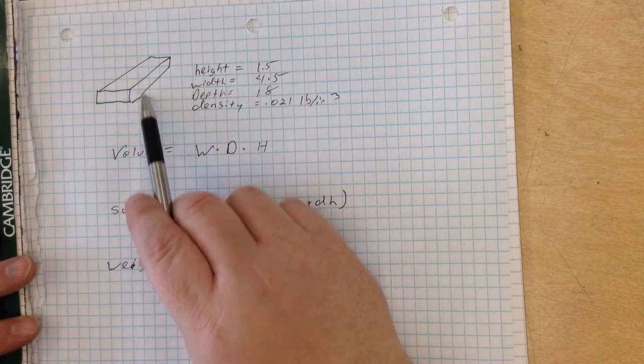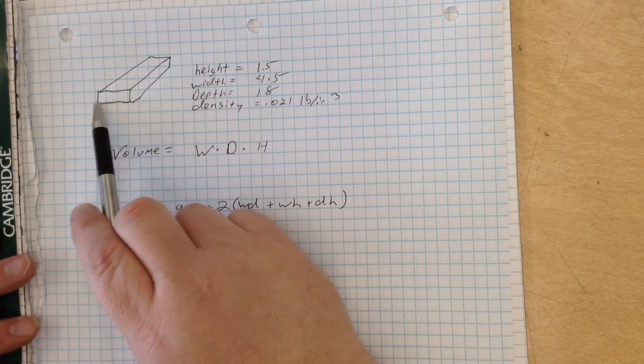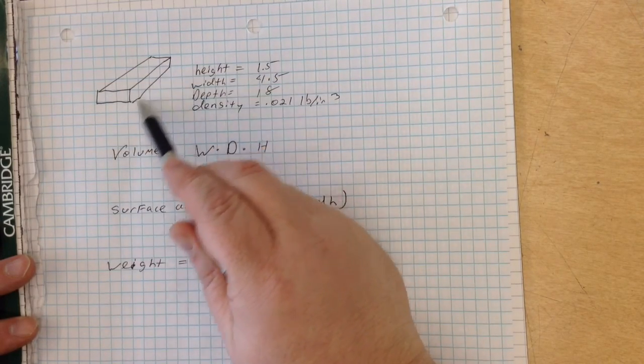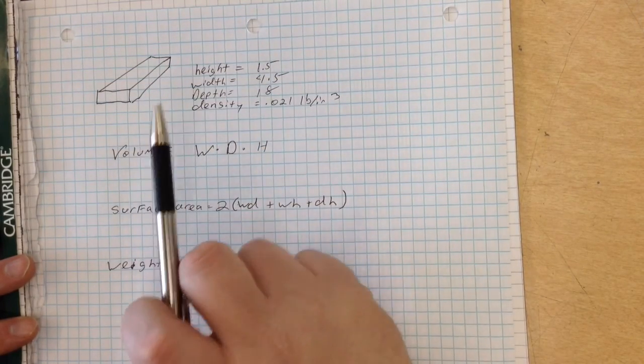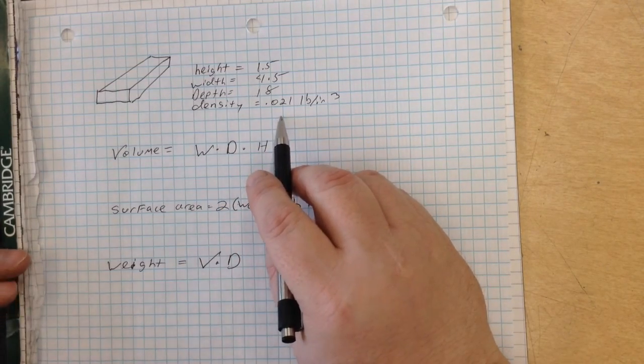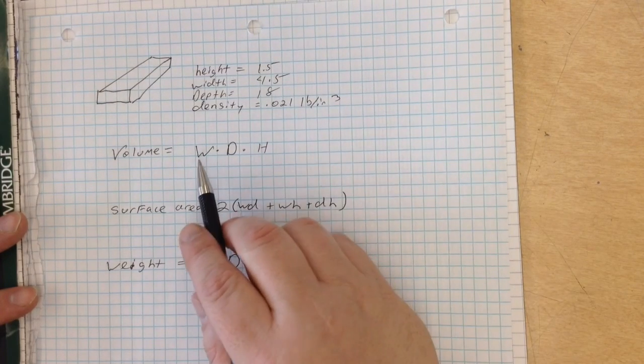Now we know that the height of this board is 1.5 inches. We know that the width of this board is 4.5 inches, and we know the depth of this board is 18. We also know that the density of this particular species of wood is 0.021 pounds per inch cubed.